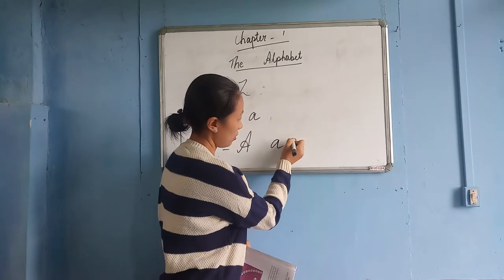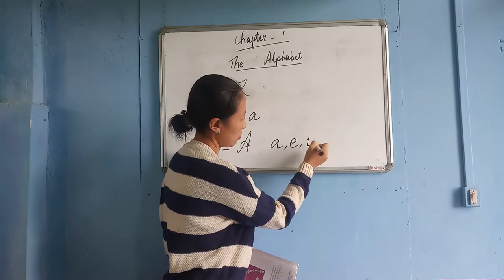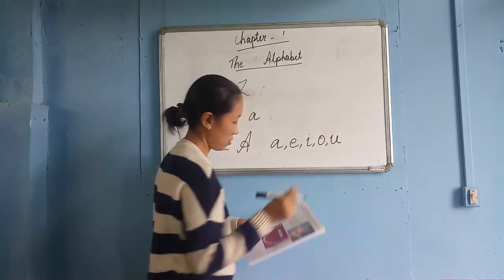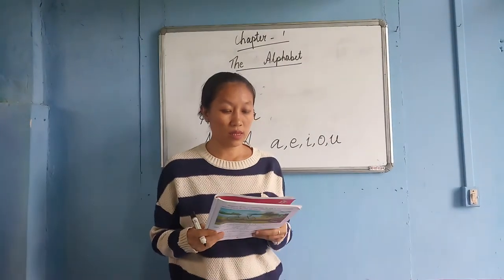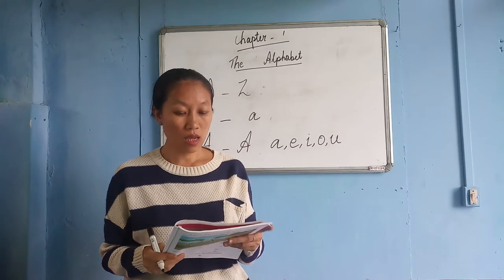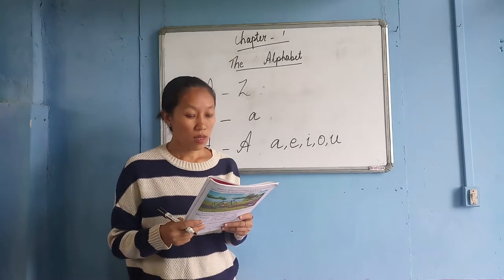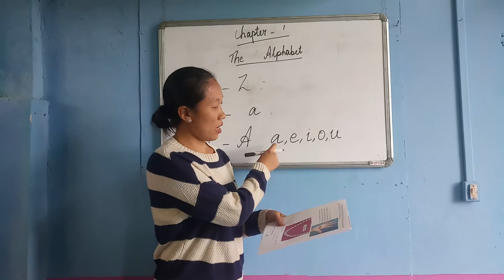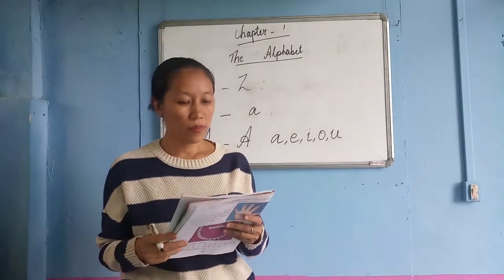A, E, I, O, U are the five letters of the English alphabet which can be pronounced without the help of any other letters. These five letters — A, E, I, O, U — are called the vowels.